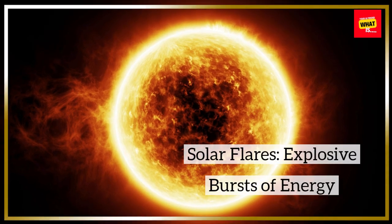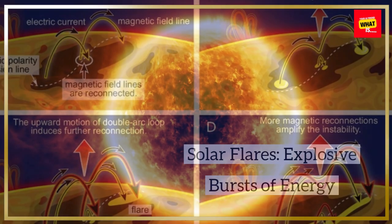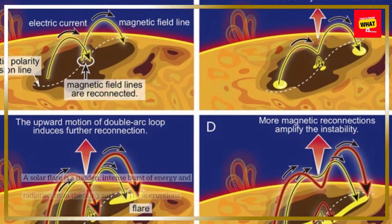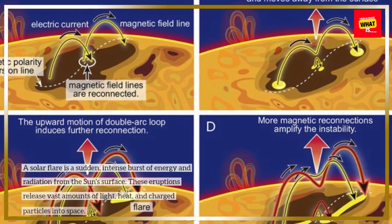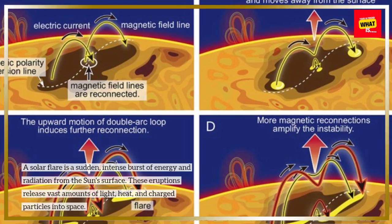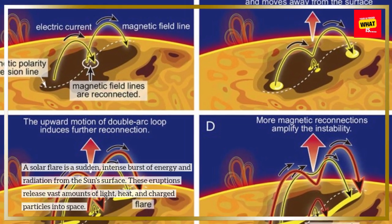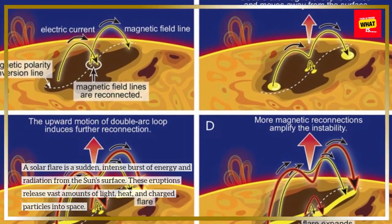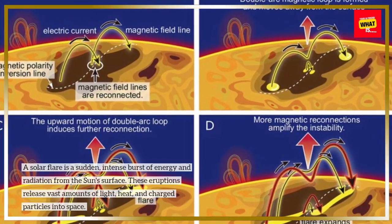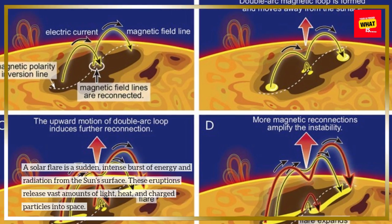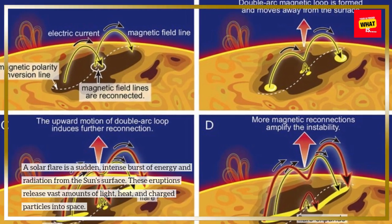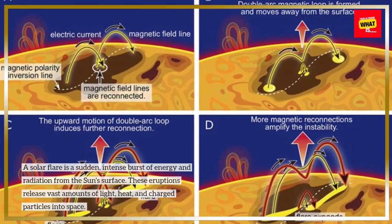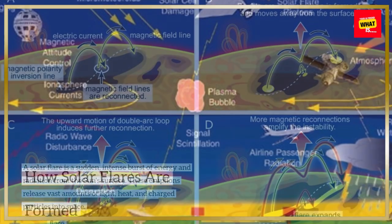Solar flares. Explosive bursts of energy. A solar flare is a sudden, intense burst of energy and radiation from the sun's surface. These eruptions release vast amounts of light, heat, and charged particles into space.